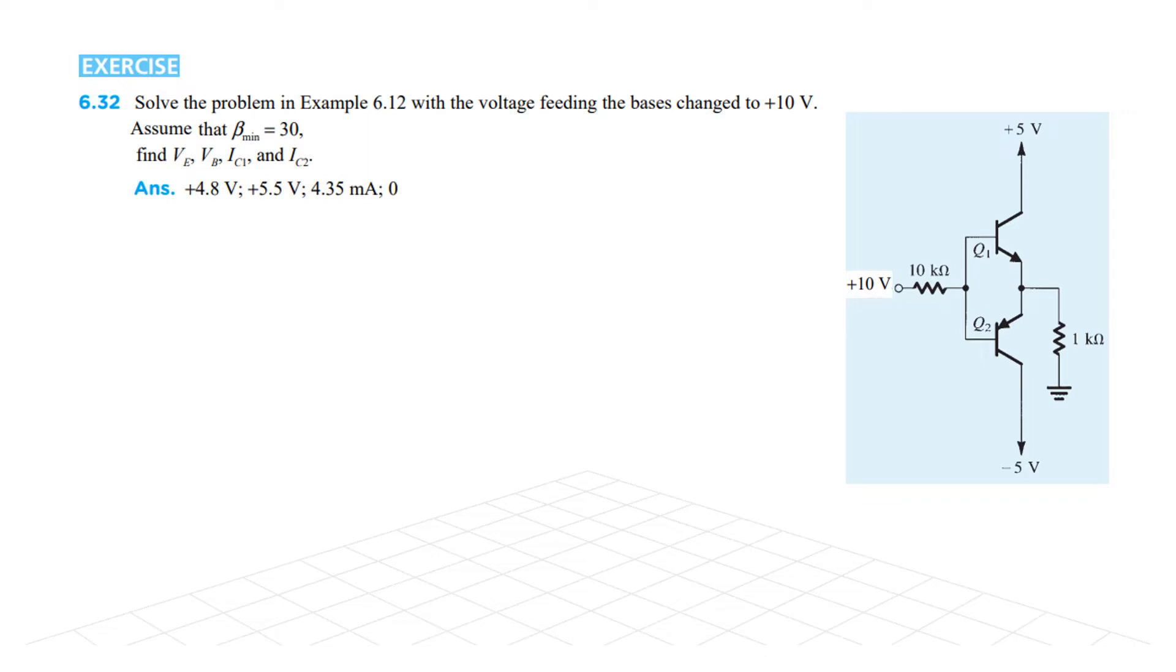This is changed now. Assume that beta minimum is 30, and we have to find VE, VB, IC1, and IC2.